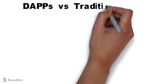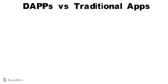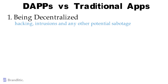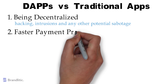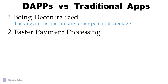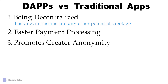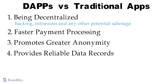Let's discuss the key advantages of DAPs over traditional applications. First, being decentralized makes these apps tamper-proof — records cannot be altered, and they are highly secure and immutable from hacking, intrusions, and any other potential sabotage. Second, it enables faster payment processing due to the absence of intermediate applications such as integrated payment gateways. Third, it promotes greater anonymity as these applications do not require users to follow a lengthy sign-up process. Fourth, it provides reliable data records because users can access the public blockchain to verify transaction information.